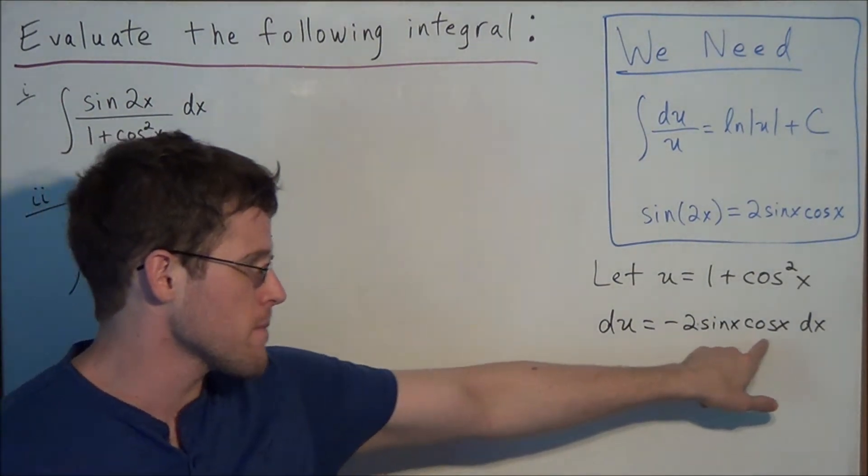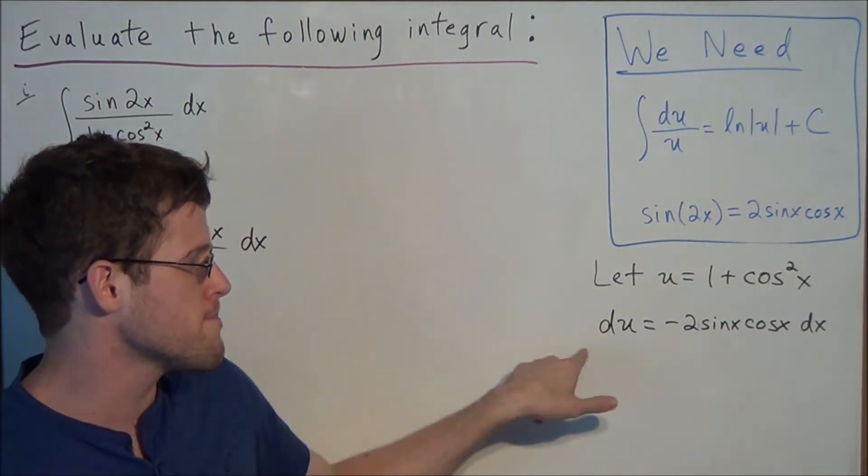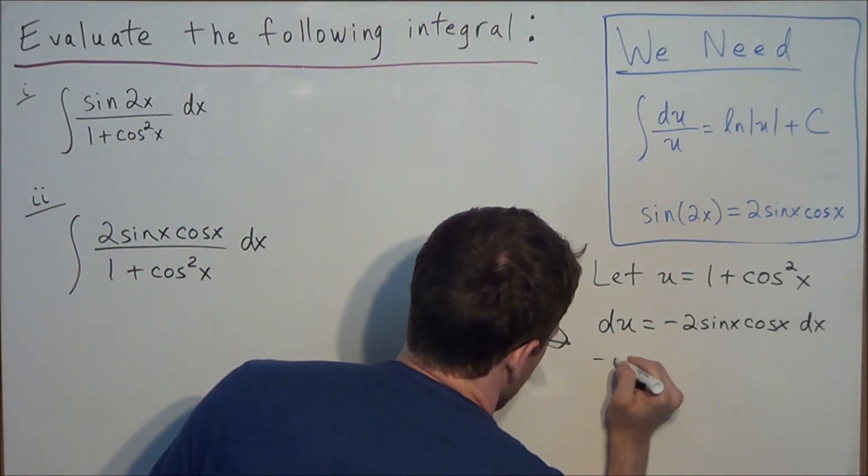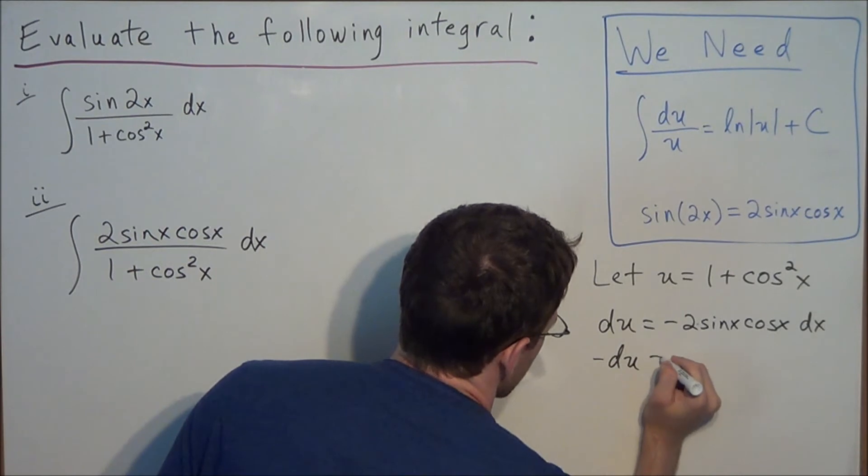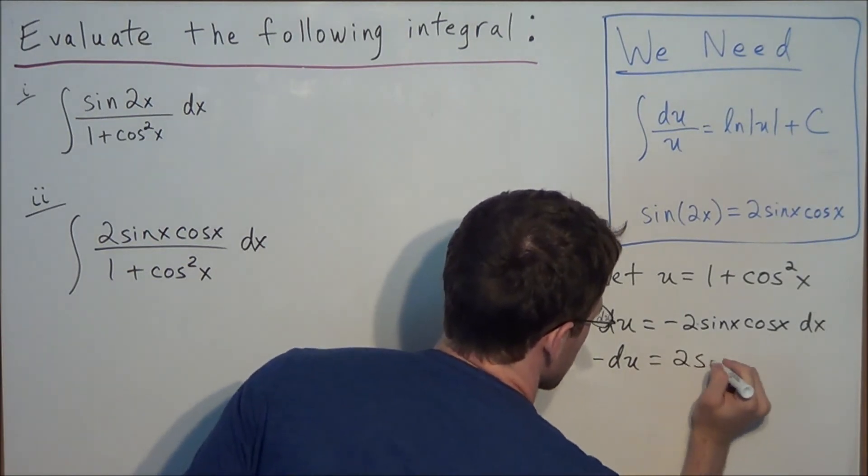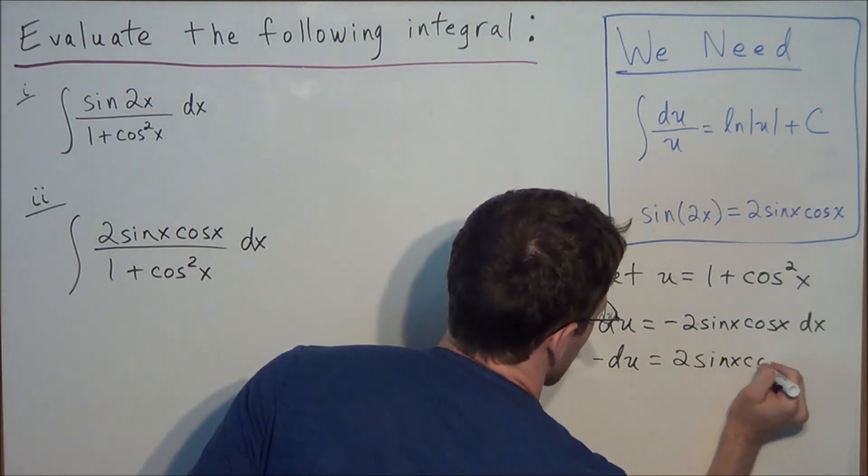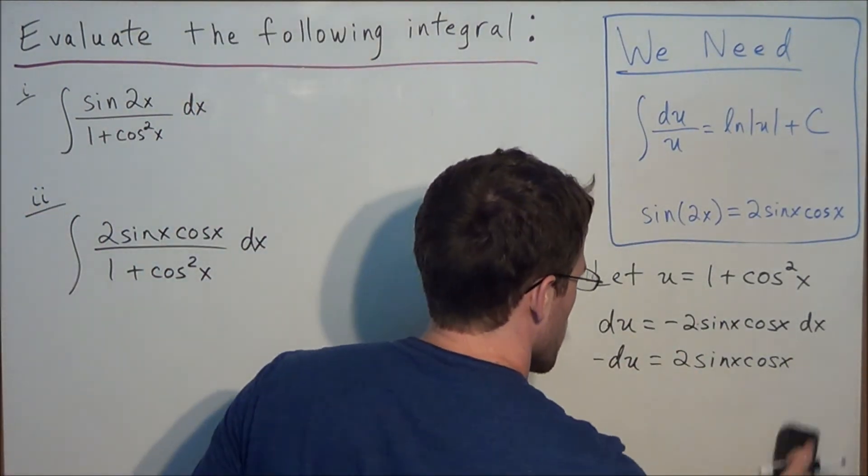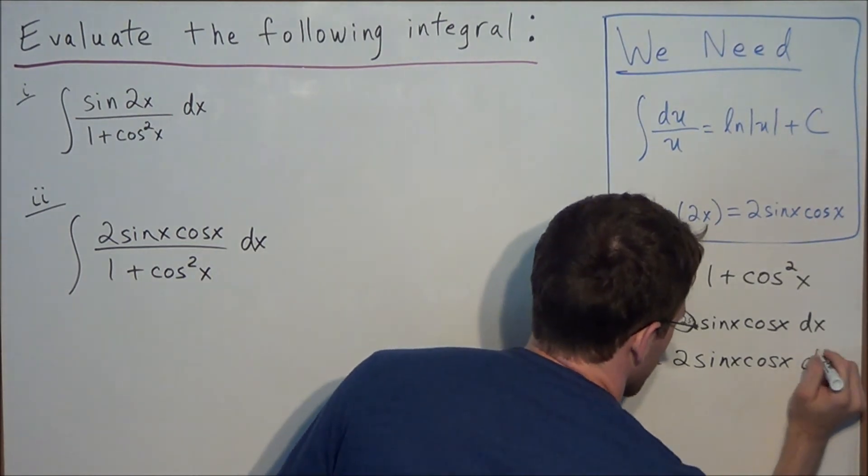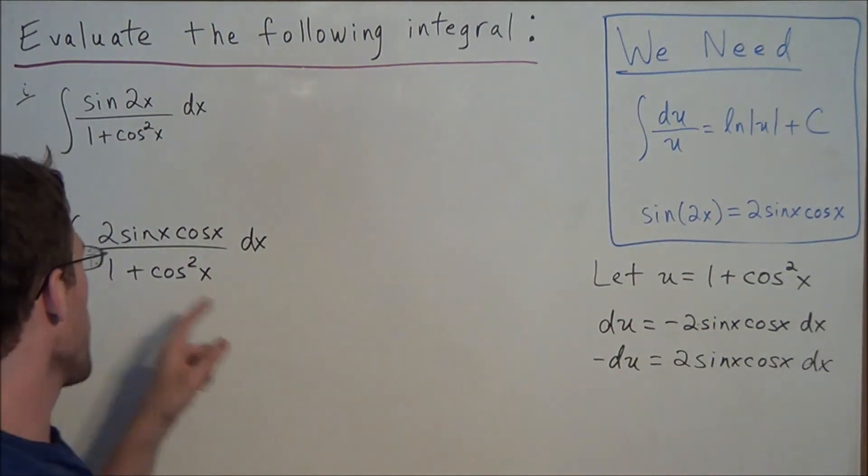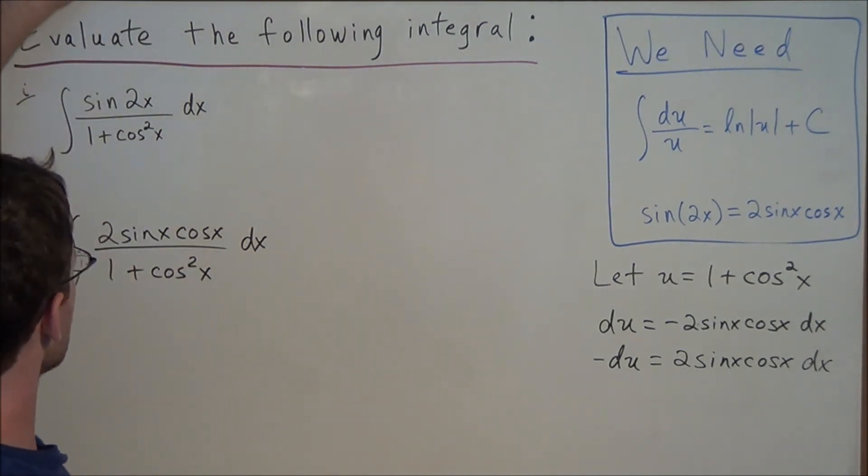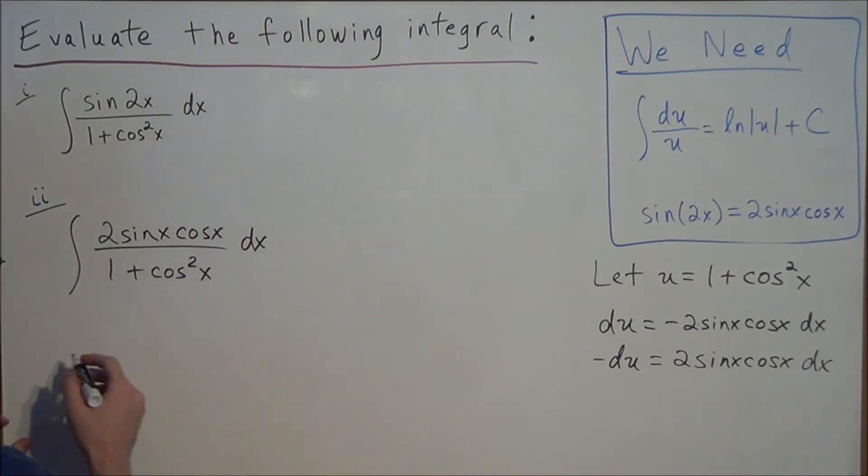So one thing we could do to make it match directly is multiply both sides of this equation by negative 1. Then we have that negative du is equal to 2 sine x cosine x dx. So notice now that our right-hand side of our equation matches our numerator in our problem that we're working on. So now we're able to make our substitutions directly.